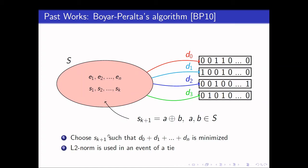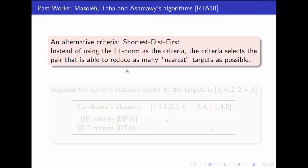In the BP algorithm, the best candidate is chosen such as the L1 norm or the sum of the distances is minimized. In the case of a tie, the L2 norm or the sum of the square of the distances will be used as a tiebreaker. There's also another criteria being introduced by Masole, Ta'a and Oshmawi, and that is the shortest distance first criteria. Unlike BP, which uses the L1 norm as the criteria, the shortest distance first actually selects the element that is able to reduce as many nearest targets as possible.